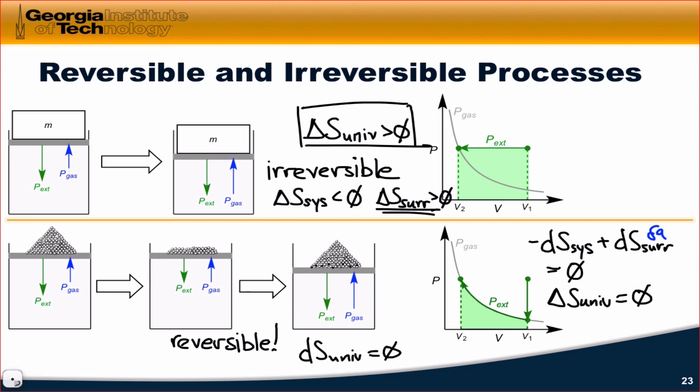Which has advantages because that means, for example, the universe is taking as small of a heat tax from us as possible as we conduct this process.